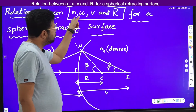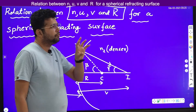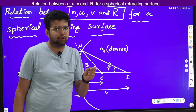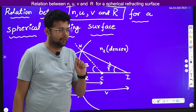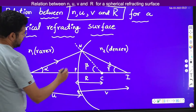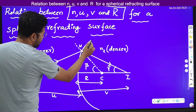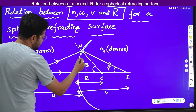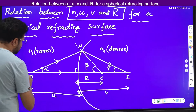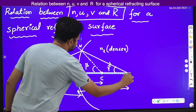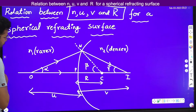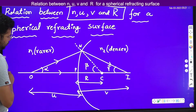Since we need to find the refractive index n, we should definitely use Snell's law here. We have considered one spherical refracting surface with a principal axis, and here we have considered a point object on the principal axis.